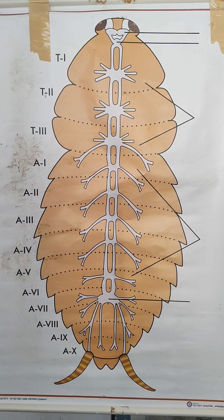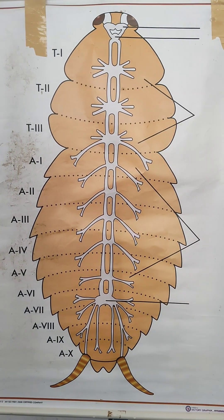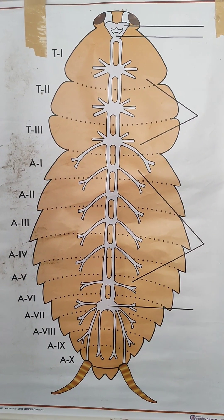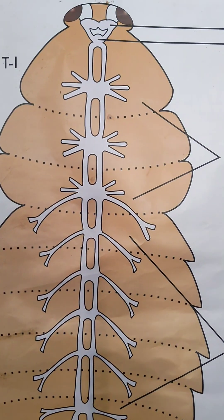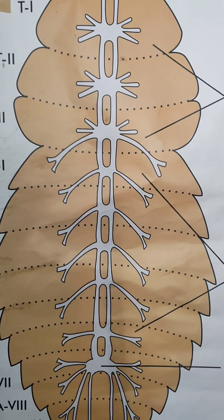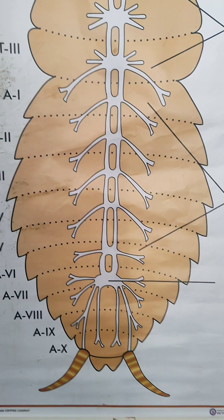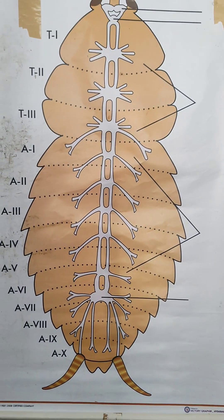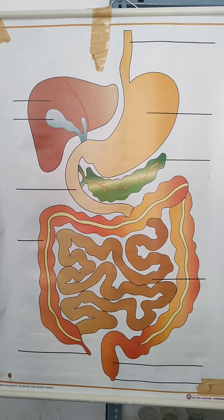This is the nervous system of earthworm. You have to draw a diagram and label it — at least 2 to 4 parts. More labellings are also acceptable, but you must write at least 2 to 4 parts.